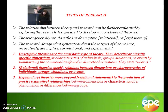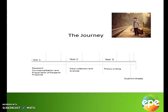The research journey for a PhD is basically a three-year period. In year one, you focus on research conceptualization and preparation of your research proposal. In year two, you are busy with data collection, sampling frames, and analysis. In year three, you are writing up your thesis and submitting it for a final examination. From year one you are already busy with conceptualization and identifying the main themes of research.